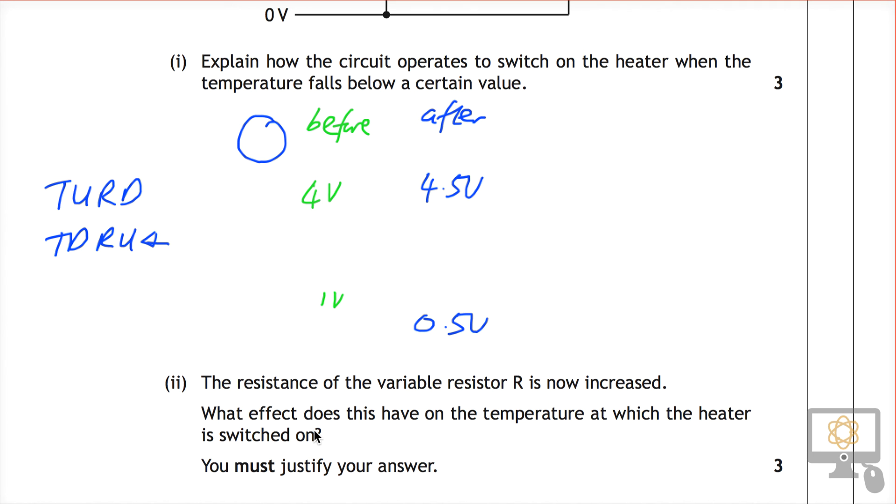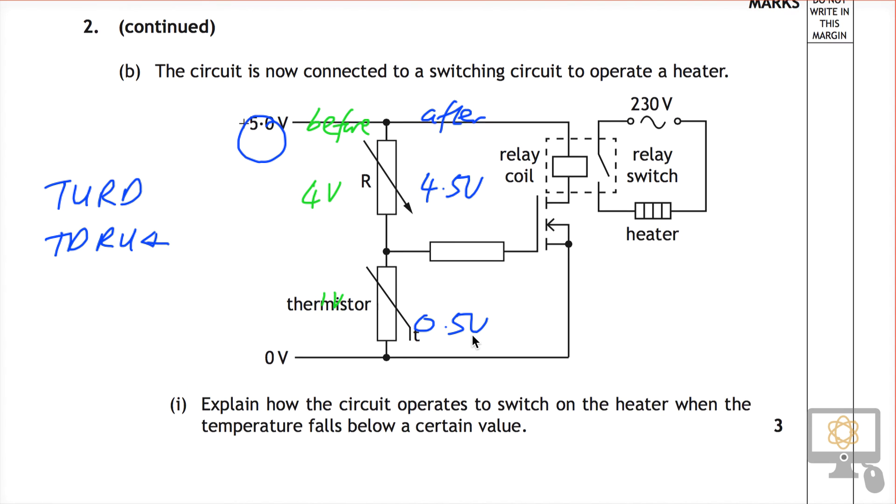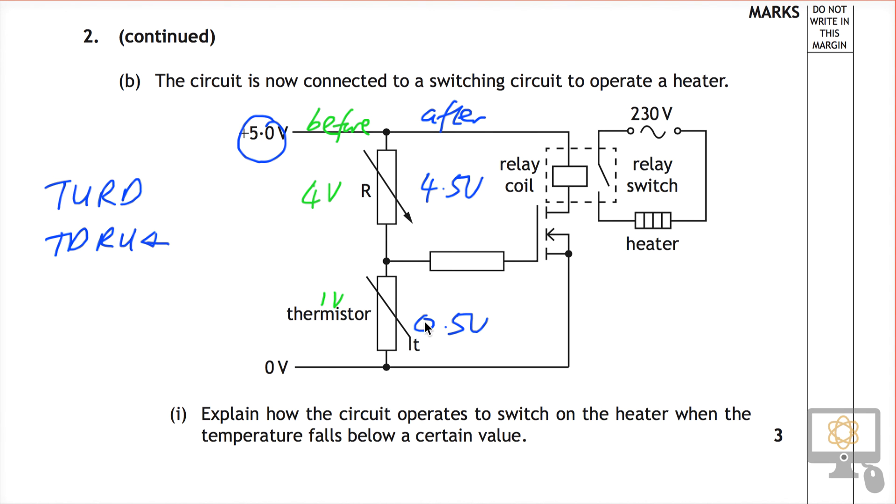And the reason is the resistance of the thermistor must get even larger than it did before because it needs to have a larger voltage share. And whenever it is larger and has increased by an even larger amount, then it will switch on the MOSFET, but only then. So that's the way the marking scheme is laid out. One mark for the justification. You can't really get to the justification without thinking through it very carefully. So the temperature needs to drop even further than it did before, and that's because the resistance needs to rise even more to allow our MOSFET to switch on.